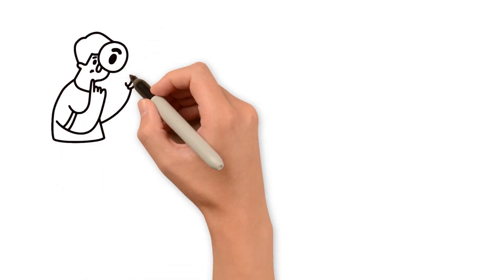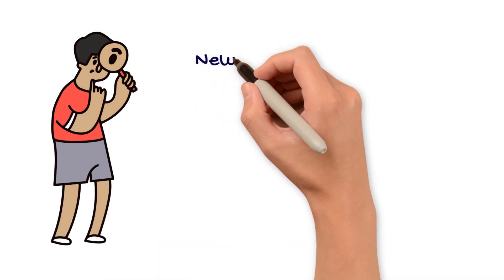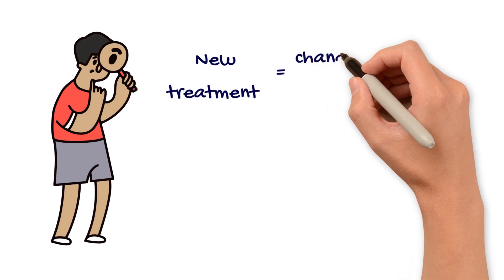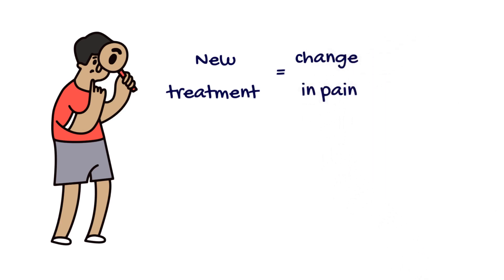Pretend you are asked to participate in a randomized control trial testing a new treatment boasting to reduce pain compared to a placebo pill. You may be more likely to attribute any changes in your pain to the treatment you received if you know that you've been given the real pill.